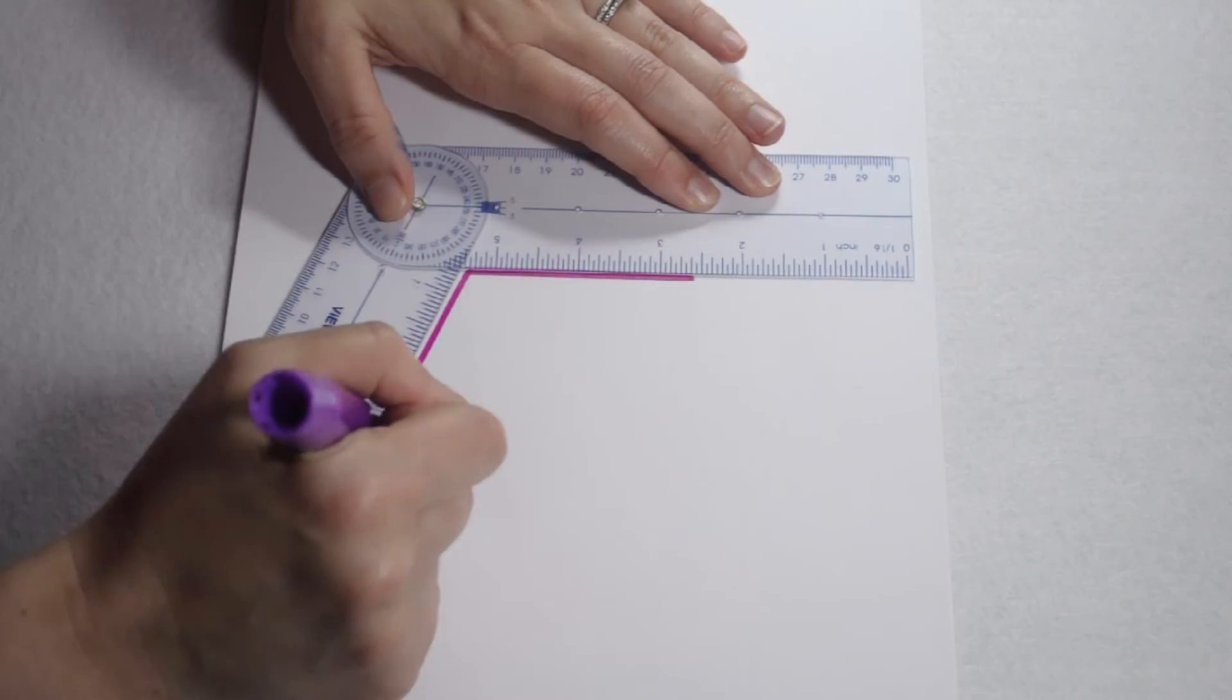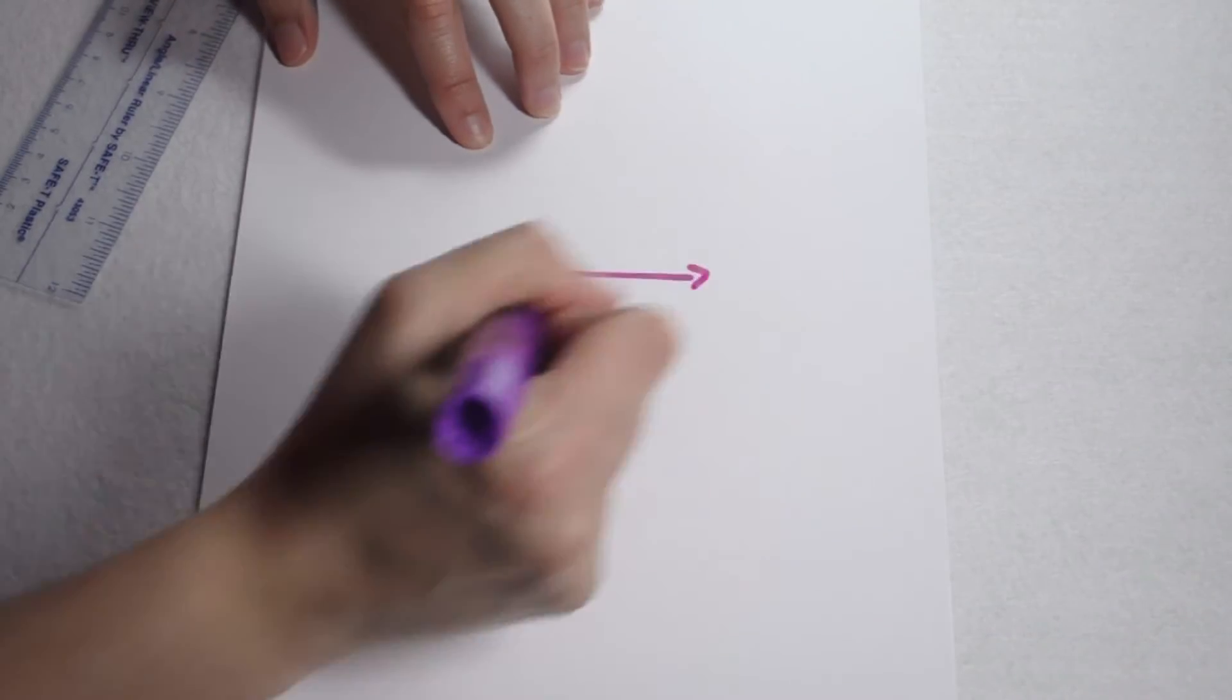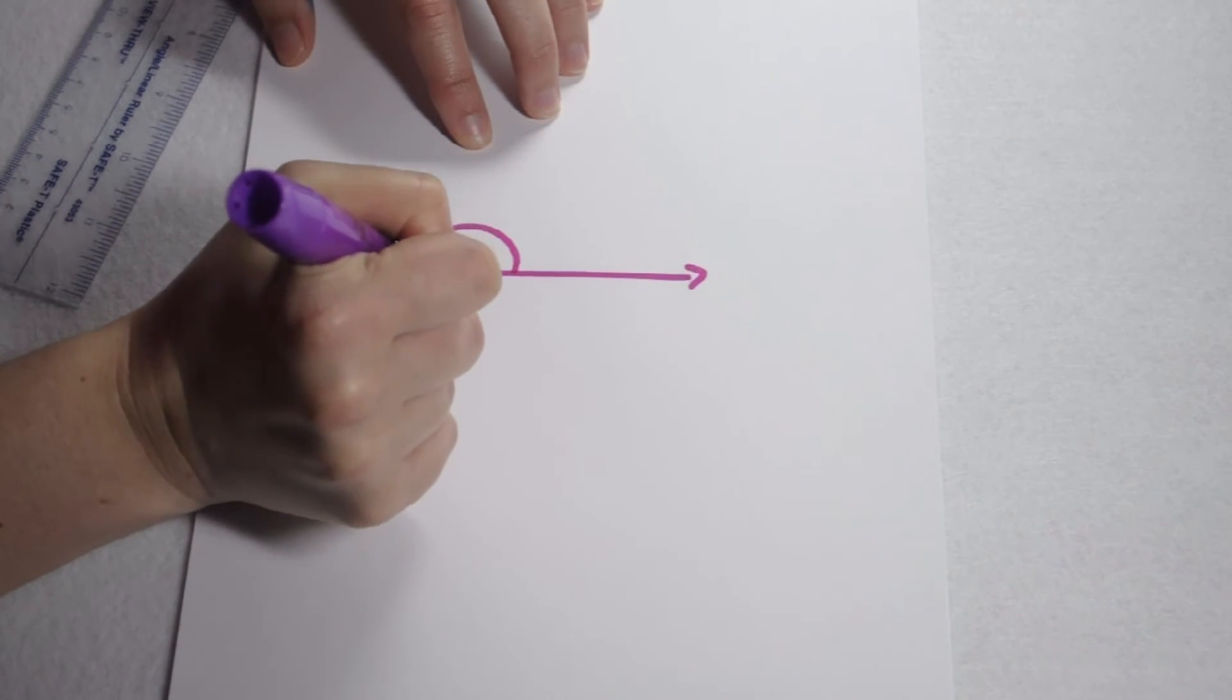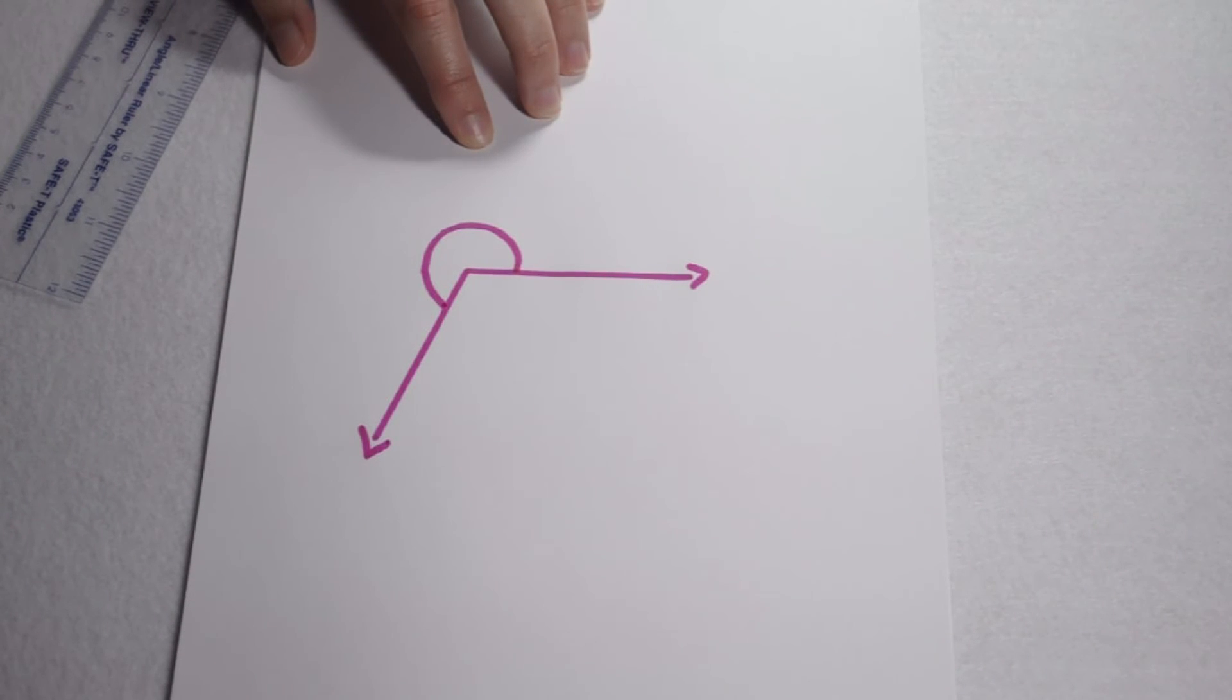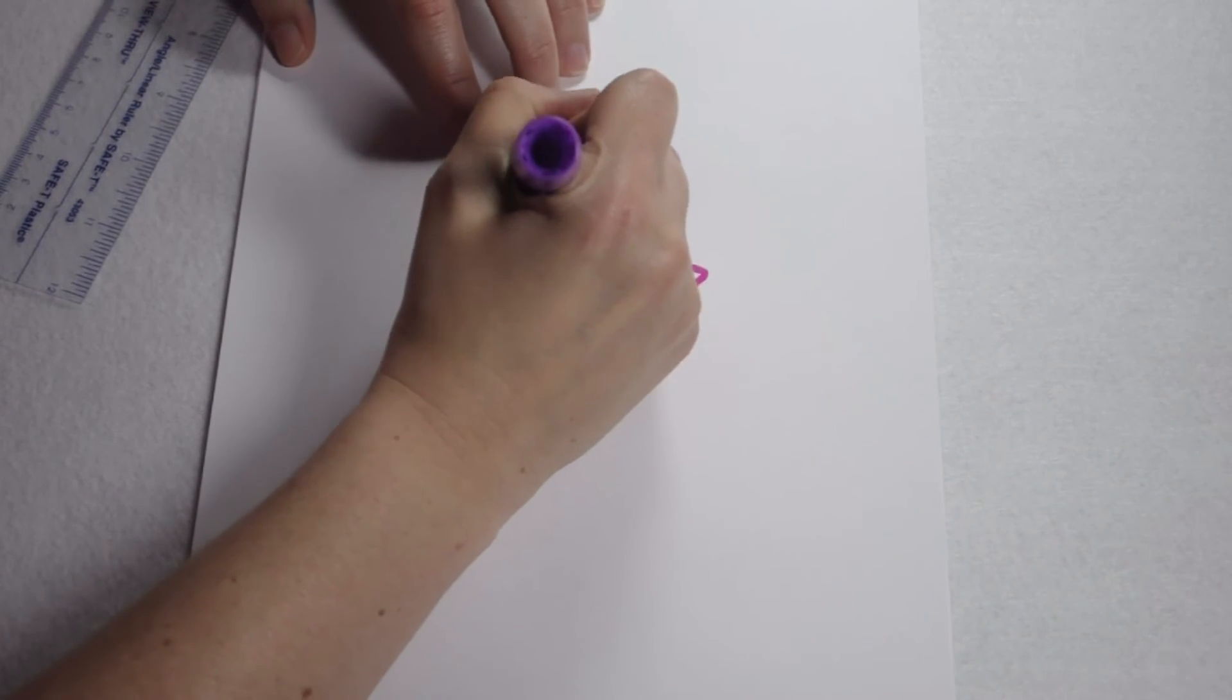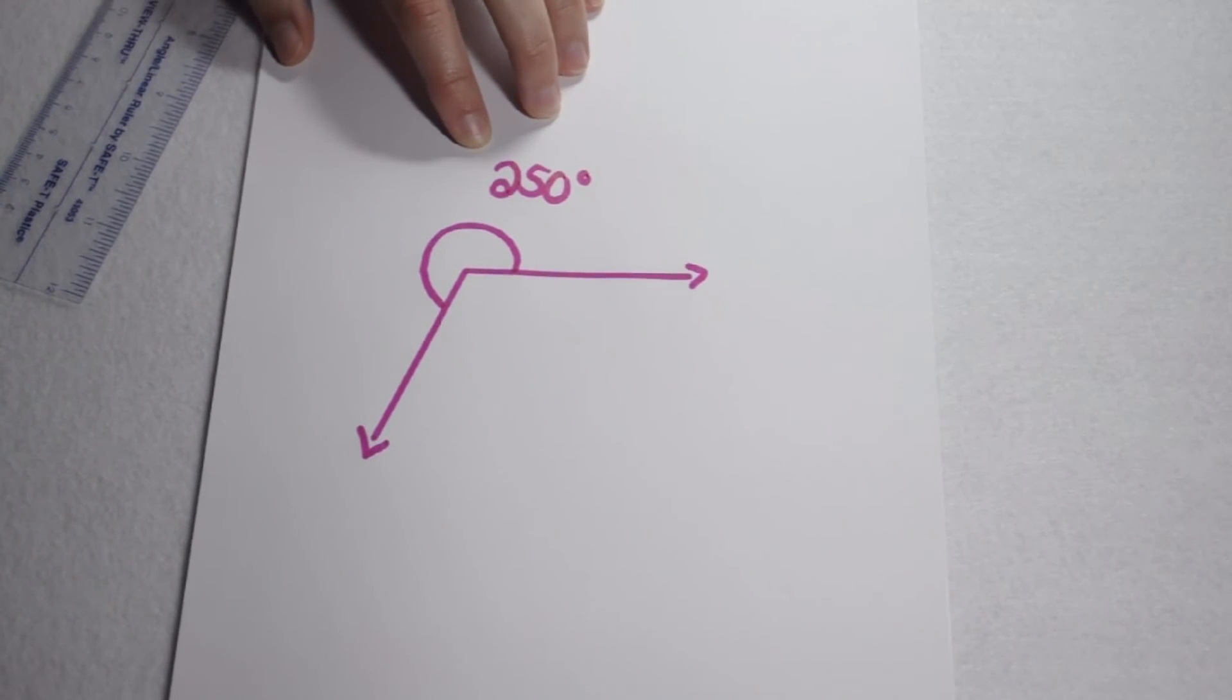Now, since we want this to be a reflex angle, we need to make sure we label it to show people that we traced this path here on the outside. That's how we communicate that we are measuring the reflex angle, not the interior angle. So this is our 250 degree reflex angle.